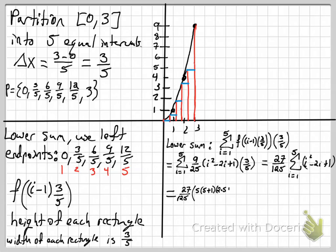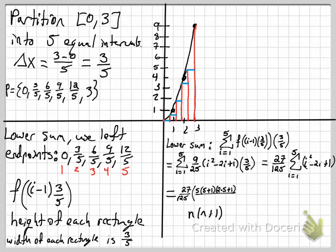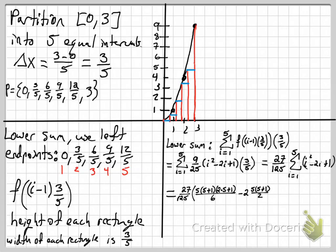Using the formula for the sum of i squareds: n(n+1)(2n+1)/6, with n equals 5. Then the formula for the sum of i's is n(n+1)/2, with the pre-existing −2 in front. Adding up 1 five times gives 5. Throwing that all into the calculator gives 6.48.